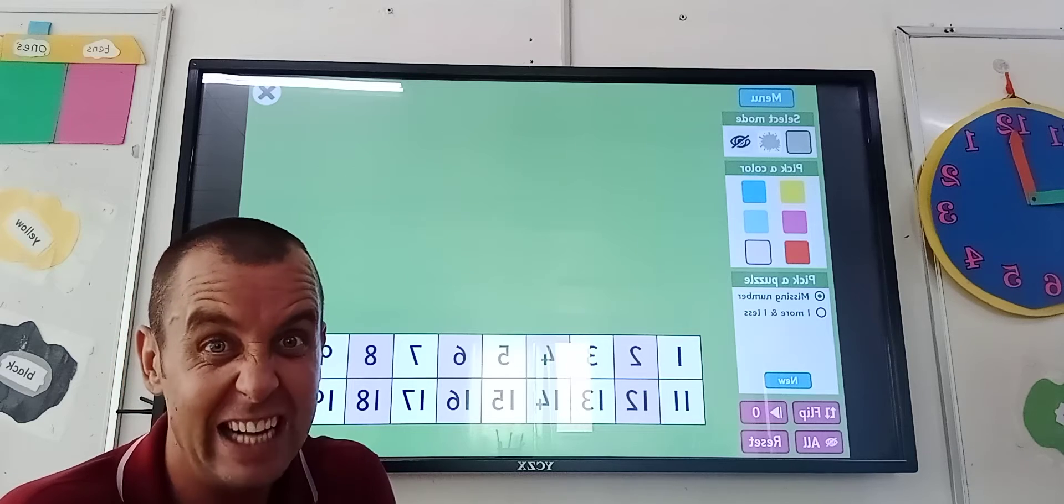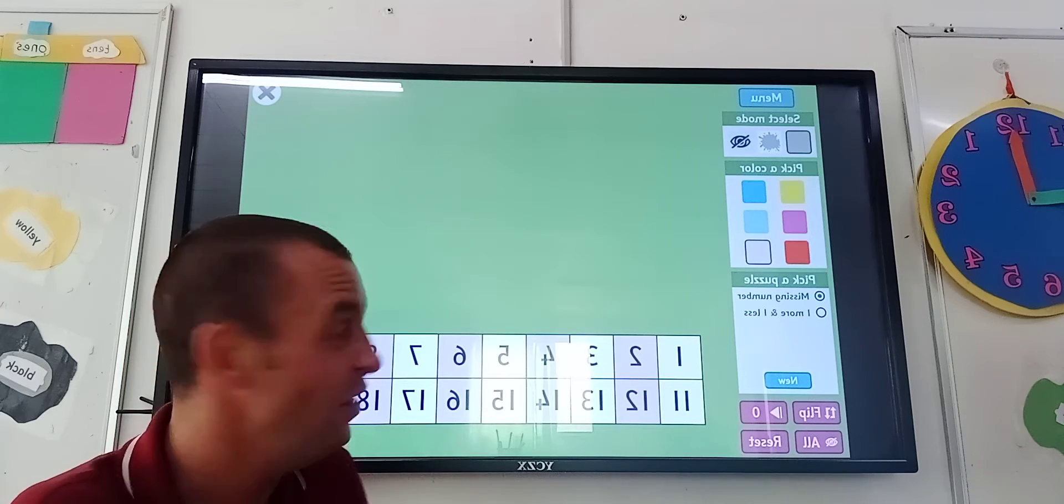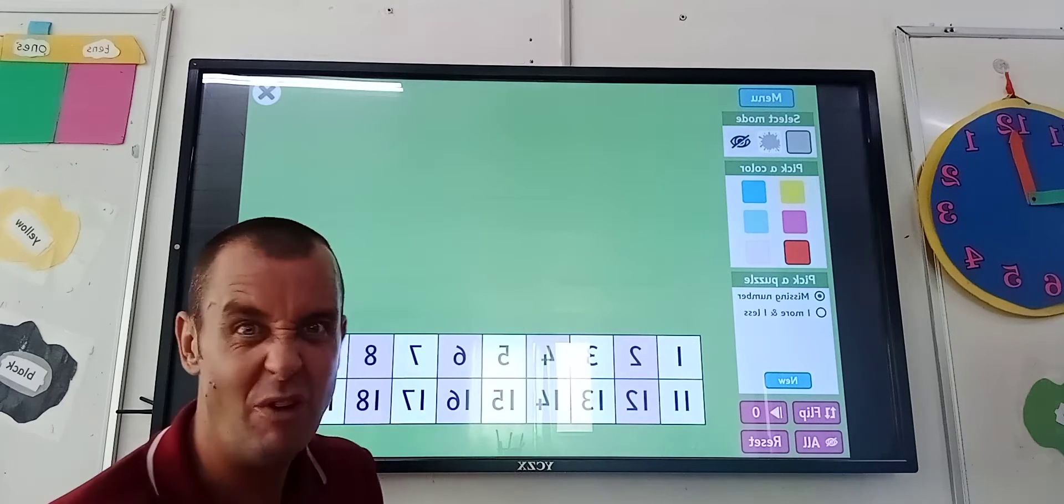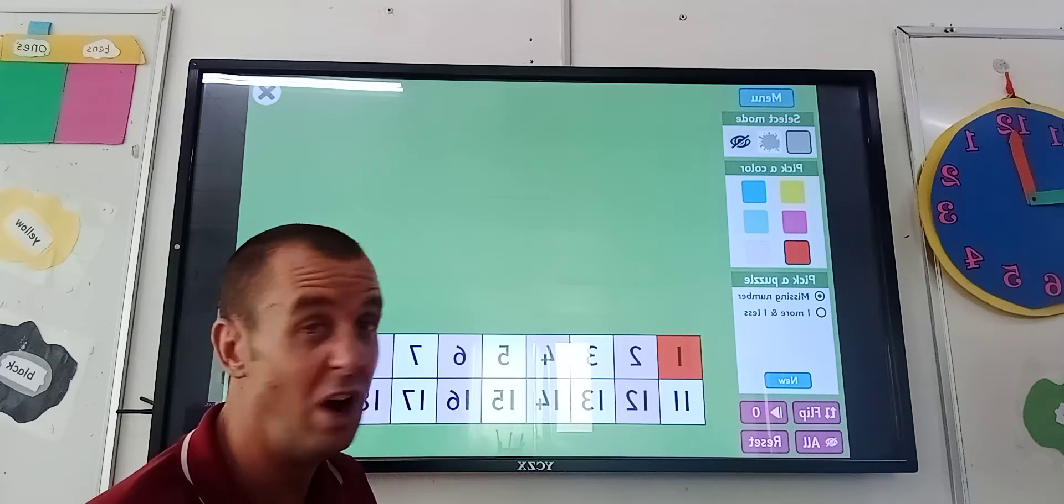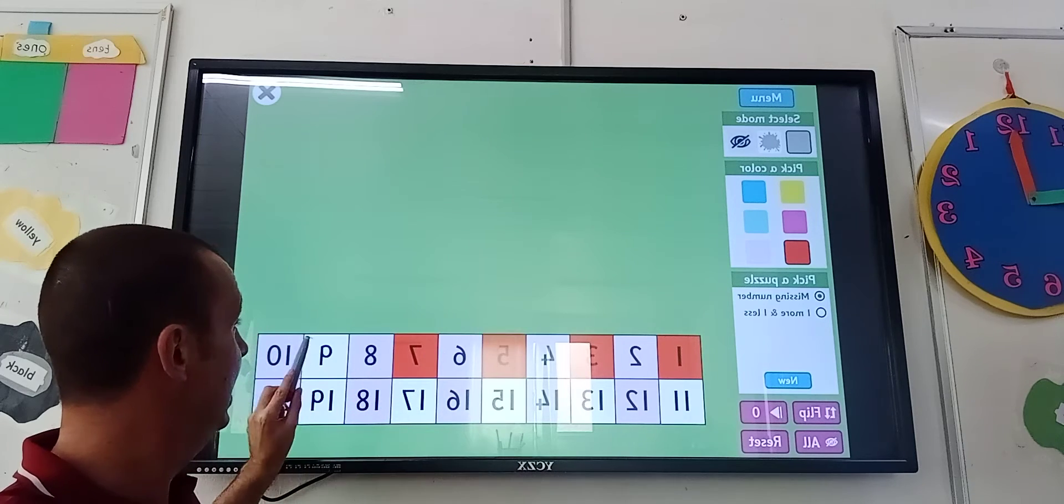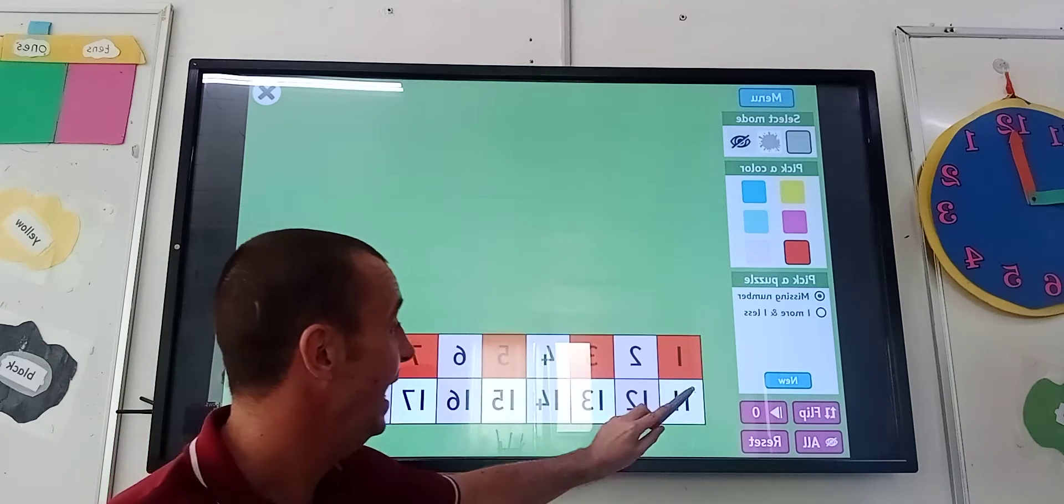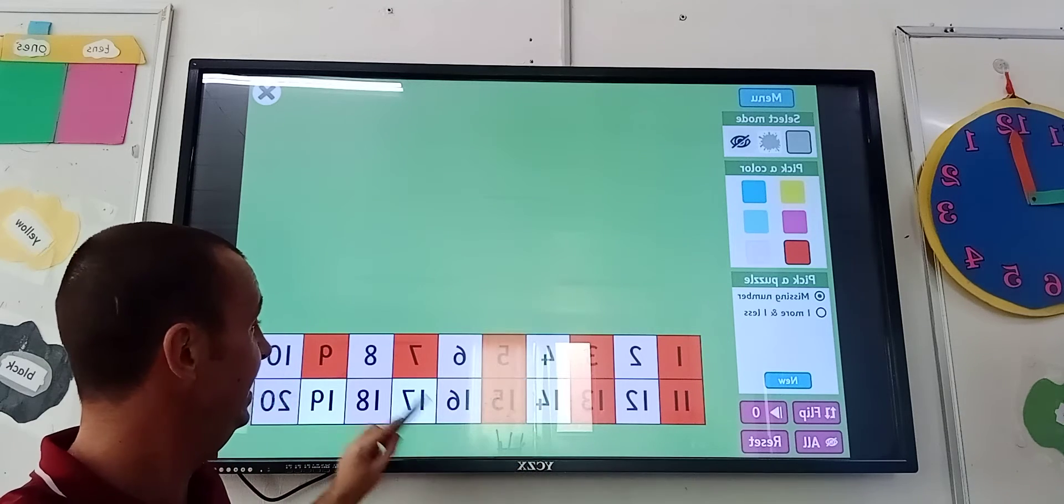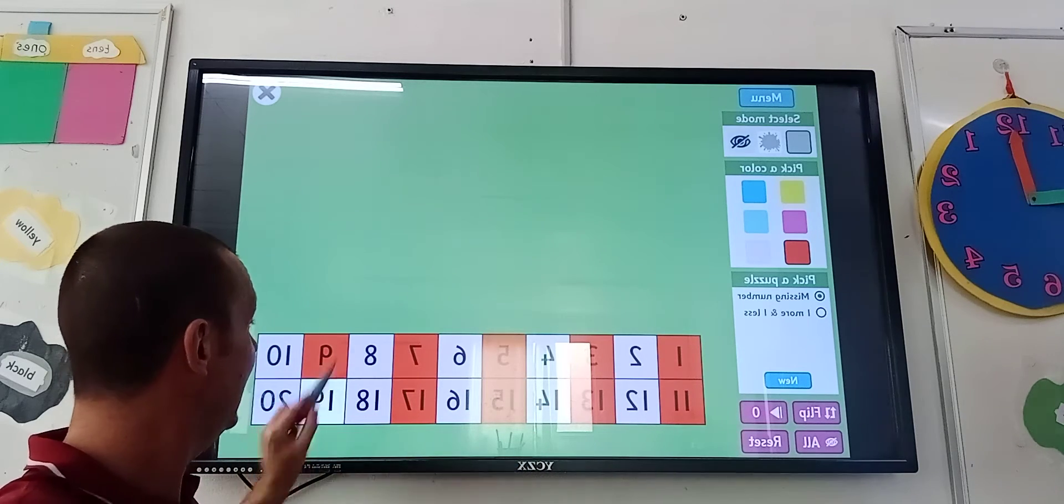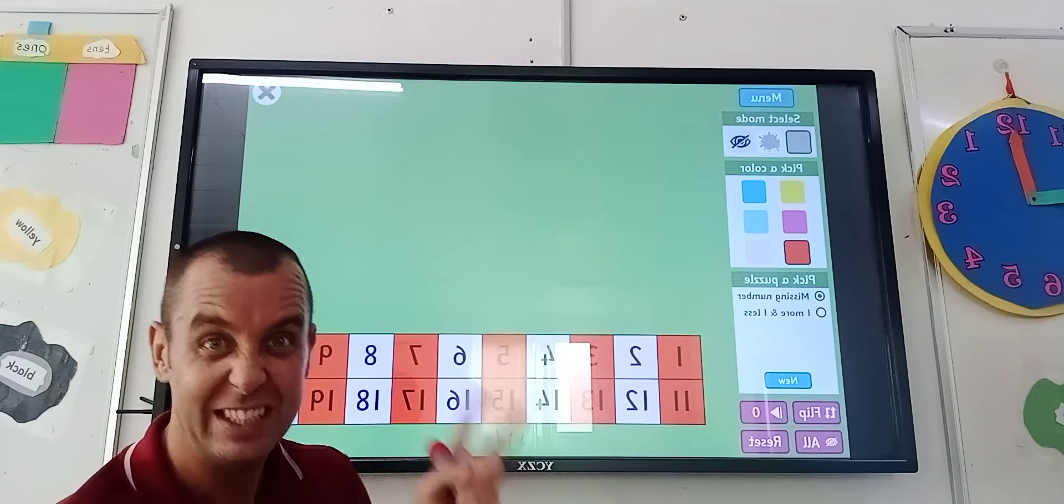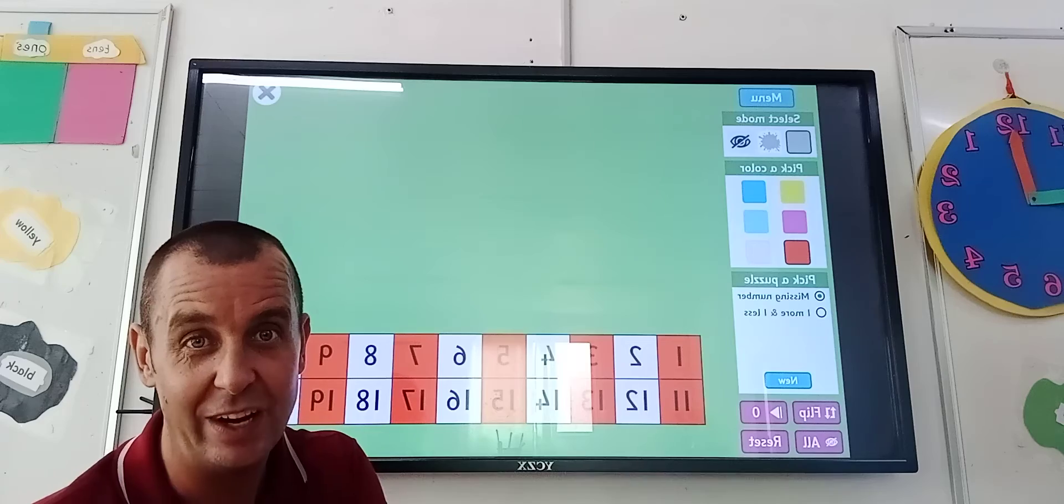What you could even do for practice at home is do it the other way. If I choose the colour orangey-red, you can do 1, 3, 5, 7, 9, 11, 13, 15, 17, 19. You could even do that for practice. So we can start as long as we're counting in twos.